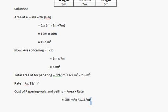255 square meters multiplied by Rs 18 per meter square equals Rs 4,590.